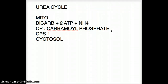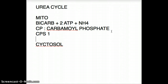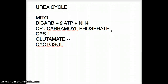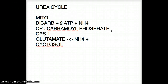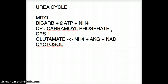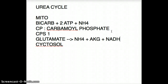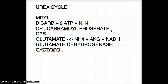One more thing we have to understand is the ammonia — where is it coming from? Ammonia is coming from glutamate. Glutamate gives us ammonia and in the process also makes alpha-ketoglutarate and 1 NADH. The enzyme which converts glutamate to ammonia, alpha-ketoglutarate, and NADH is called glutamate dehydrogenase.